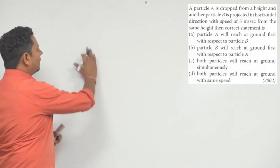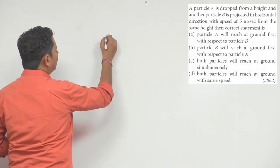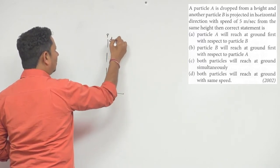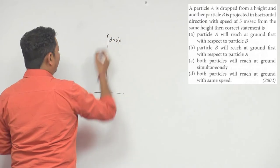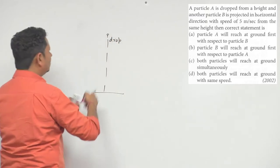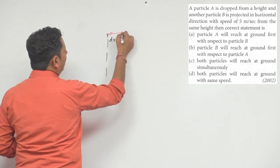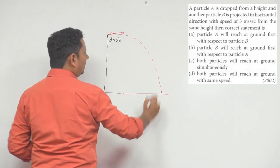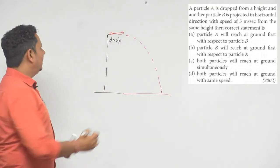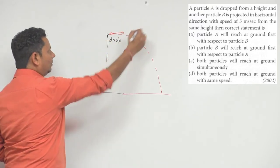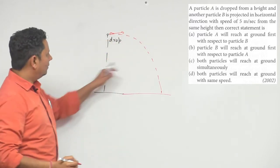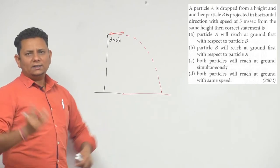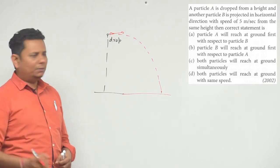Here is the scenario. One particle has been dropped from height h — that is particle A. The second particle has been launched from the same point with a velocity V horizontally, so this particle will follow a different trajectory. The question is: when will both reach the ground, and we also need to comment on their speeds.